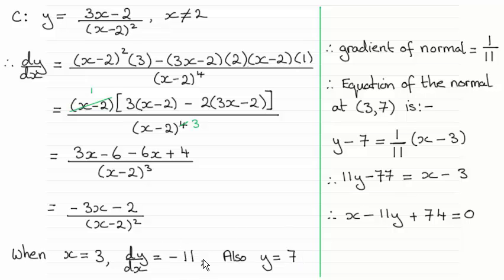So I've got the gradient of the tangent, it's minus 11. So the gradient of the normal, using the perpendicular gradient rule, just turn the fraction upside down and switch the sign, gives us the gradient of normal is 1 over 11.